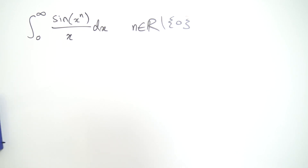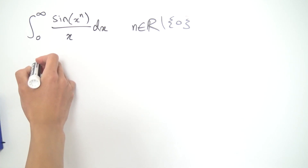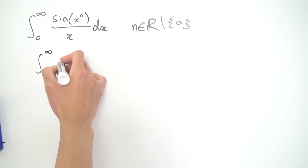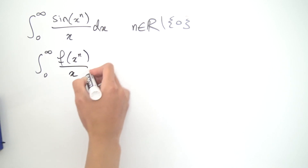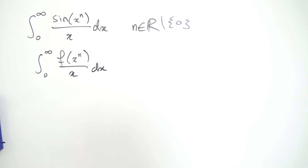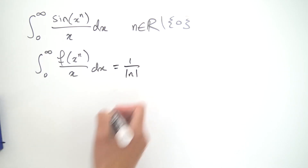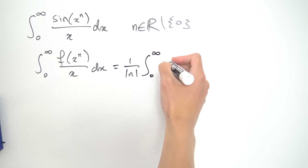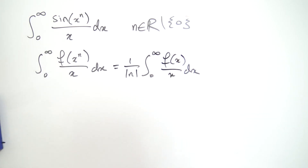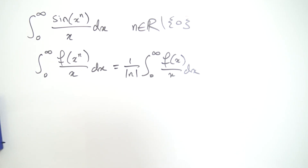Before we jump into the solution, I want to prove one cool generalization. If we have the integral from 0 to infinity of f of x to the n over x dx — where f can be anything, in this case it's sine — so long as this integral converges, I claim we can rewrite it as 1 over the absolute value of n times the integral from 0 to infinity of f of x over x dx. The nice thing is that this integral is independent of n, which makes things much nicer to evaluate — especially here, because the integral from 0 to infinity of sine of x over x is pi over 2, which I've evaluated many times on this channel.